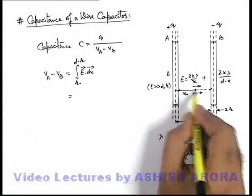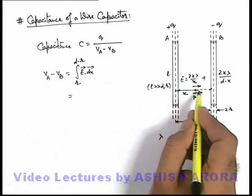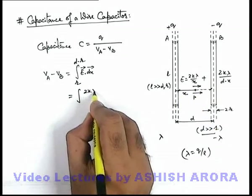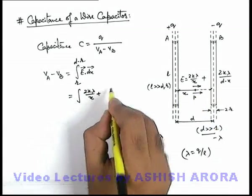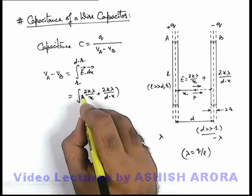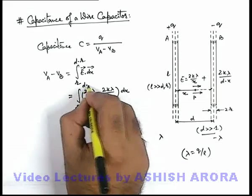If we substitute the values of electric field, obviously a dot product we can omit because E and dx are in same direction. So it is 2k lambda by x plus 2k lambda by d minus x into dx which is integrated from r to d minus r.